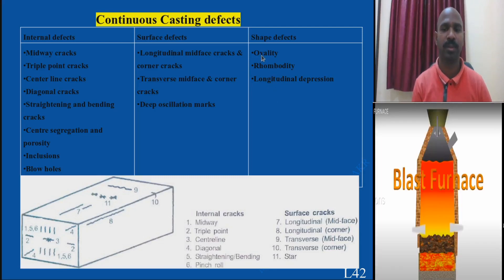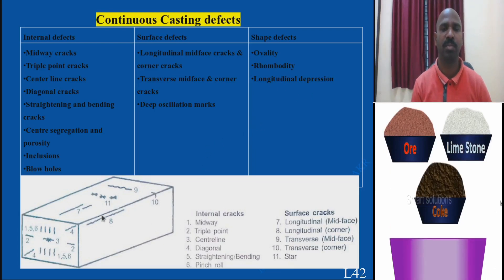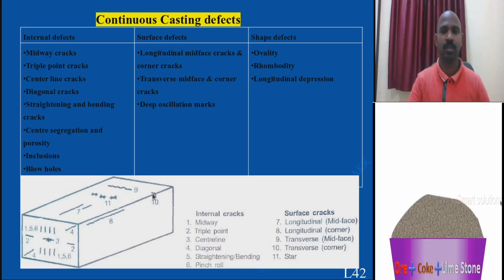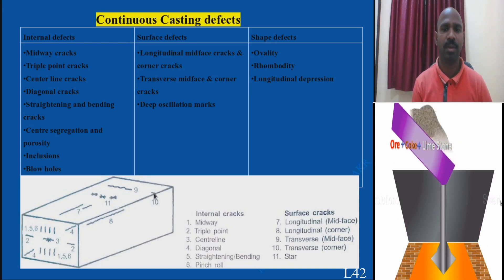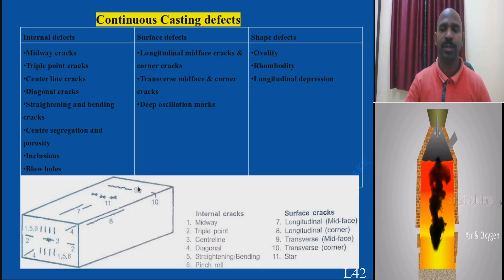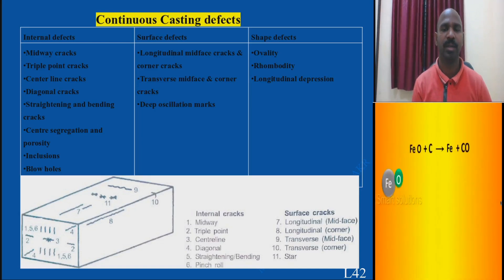Due to uneven forces, shape defects such as oval shape, rhomboidal shape, and long depression can appear in the casting product. For example, midway cracks occur at the middle of the surface — a half-line crack. Corner cracks initiate at the corners, and transverse direction cracks, diagonal section cracks, and groups of cracks can develop. All these defects can be avoided by applying and balancing soft mechanical forces, and these mitigation methods are continuously being developed.